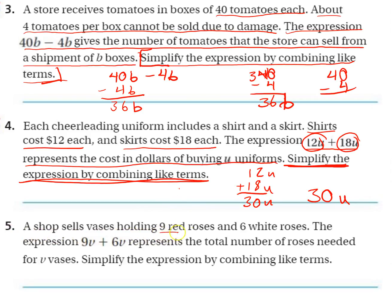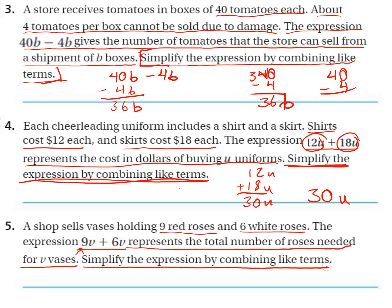Number five: a shop sells vases holding nine red roses and six white roses. The expression 9V plus 6V represents the total number of roses needed for V vases. So if you buy five vases, ten vases — no matter what, we can use this expression to find out how many roses are needed. Simplify by combining like terms. Our two terms are 9V and 6V. They both have the same variable, V, and the same exponent — neither one has an exponent in this case. So all we're essentially doing is 9 plus 6, and then we just attach that V. So 9 plus 6 is 15, and then we attach the V.